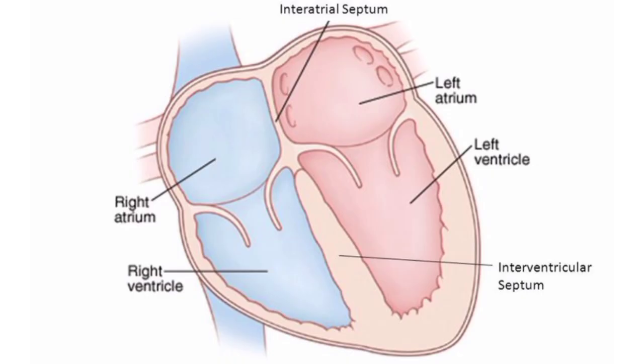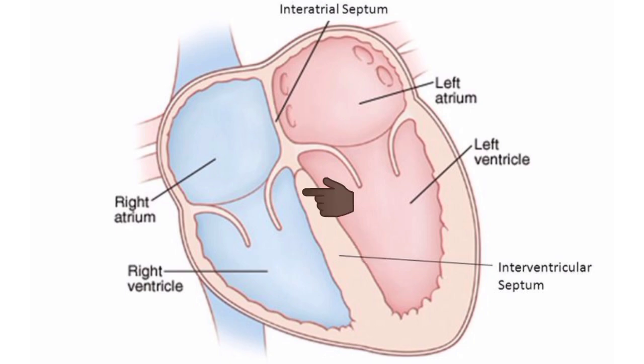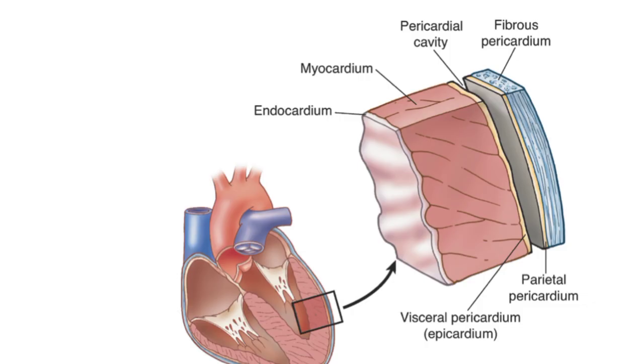The right and left atria are separated from one another by a fibrous septum called the interatrial septum. The right and left ventricles are separated from one another by the interventricular septum. The upper part of the septum is a membranous structure, whereas the lower part is muscular in nature.